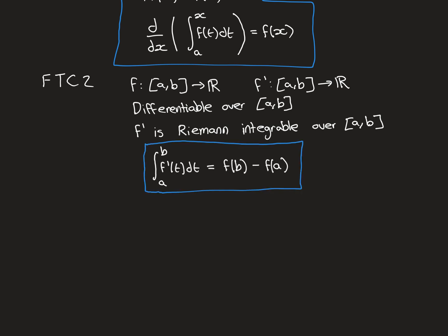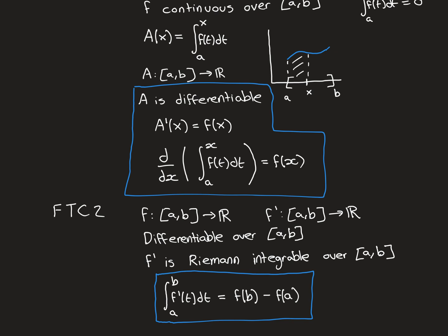The second Fundamental Theorem of Calculus states that integrating F' over [A, B] gives the value of the antiderivative F evaluated at the upper endpoint B minus F evaluated at the lower endpoint A: ∫[A to B] F'(t) dt = F(B) − F(A). This is shown in a blue box. It is what most people learned at age 16 when first taught integral calculus, and it is what people mean when they say the Fundamental Theorem of Calculus without qualification. We will now prove both theorems, starting with the first.